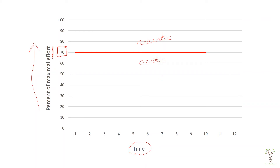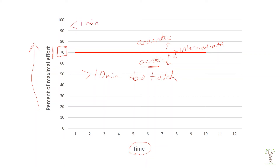If you hover around 70% effort on a treadmill, you can last for a period of time and you're primarily going to be using your intermediate fibers, because you're using a combination of aerobic and anaerobic. If you can do an activity for 10 minutes or more and maintain your breathing, you're using your slow twitch aerobic fibers. If you can only do something for less than one or two minutes, you're using primarily fast fibers. If you're doing an activity somewhere around two to eight or ten minutes, you're going to be using primarily your intermediate fibers.